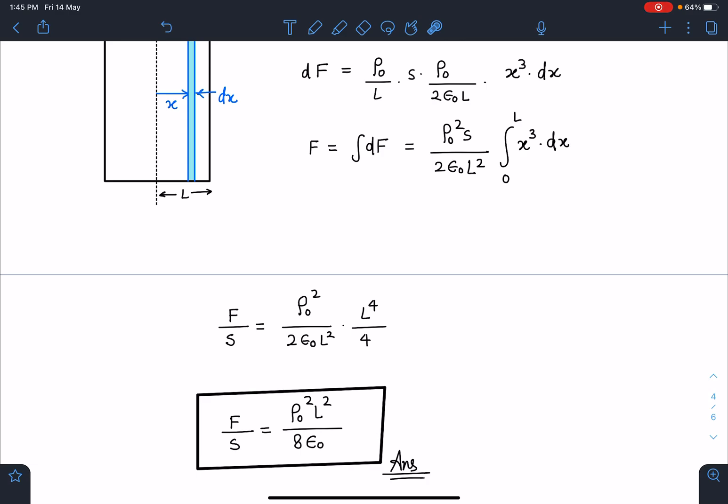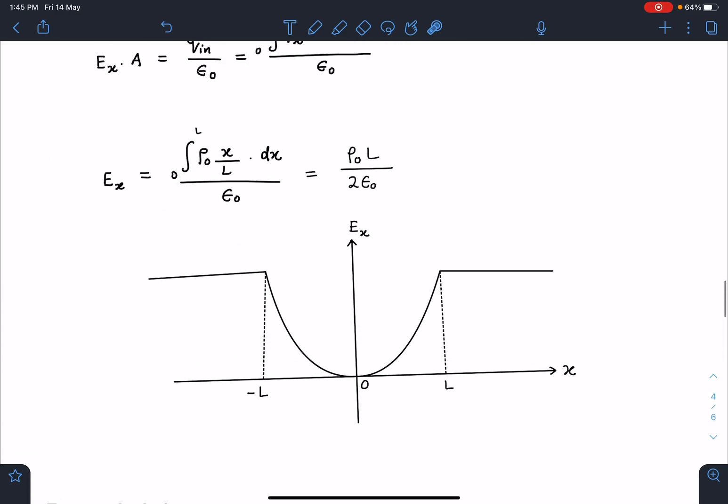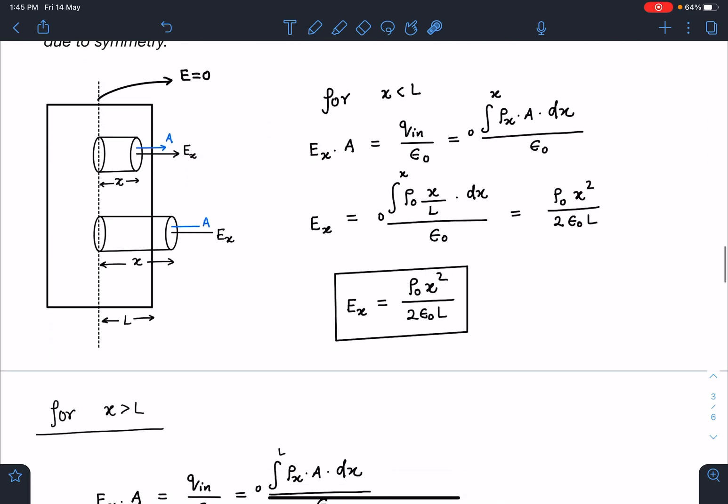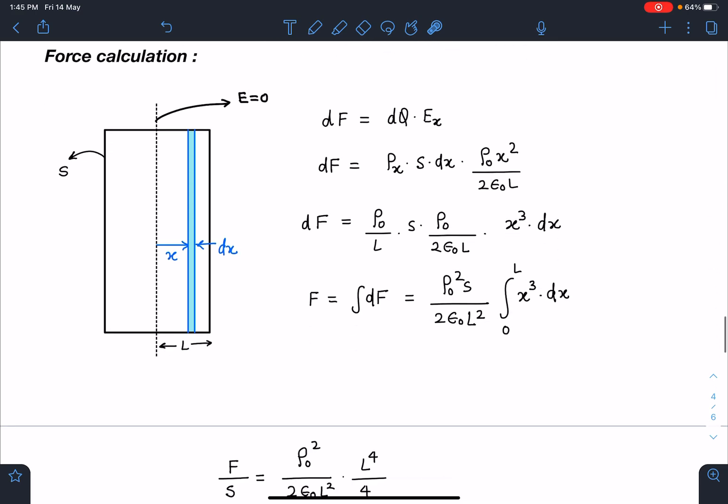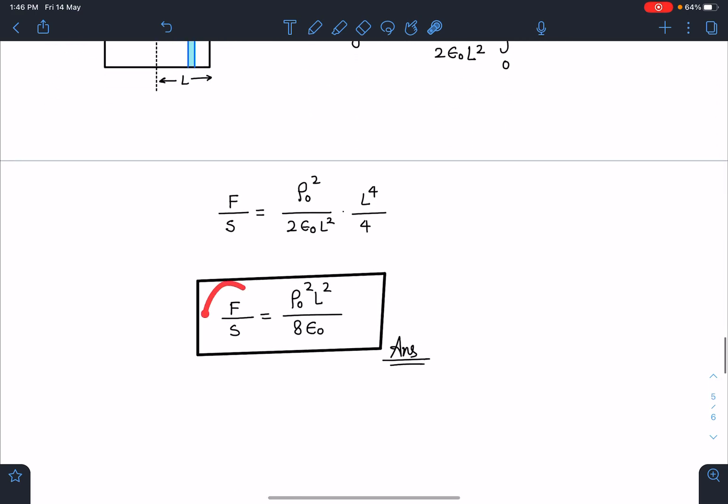When I'm writing 'force applied by one half of the slab on another half', I'm actually interested in force per unit area, otherwise the area of slab has to be mentioned, which I'm taking as S here. So this force per unit area comes out as ρ_0² L²/(8ε_0). This is the answer for this problem.